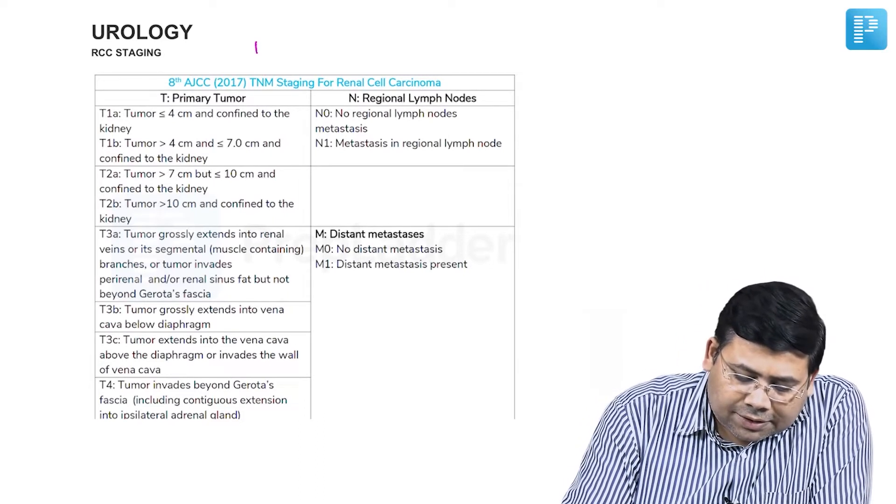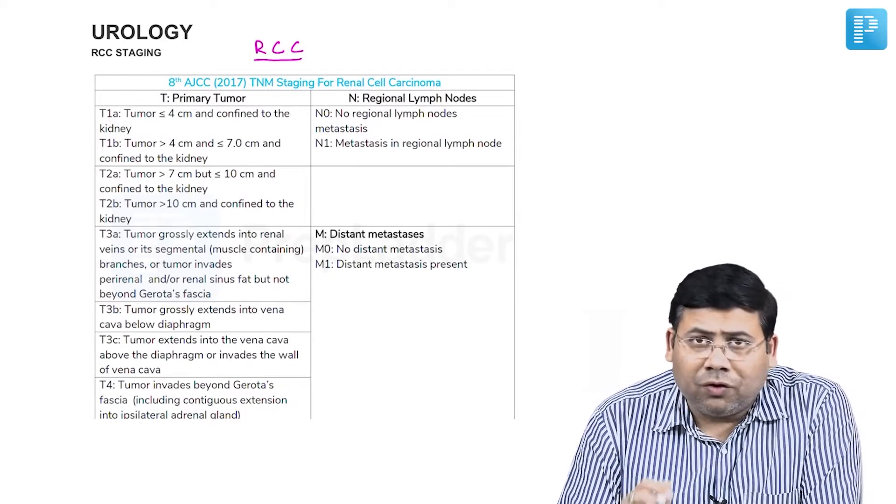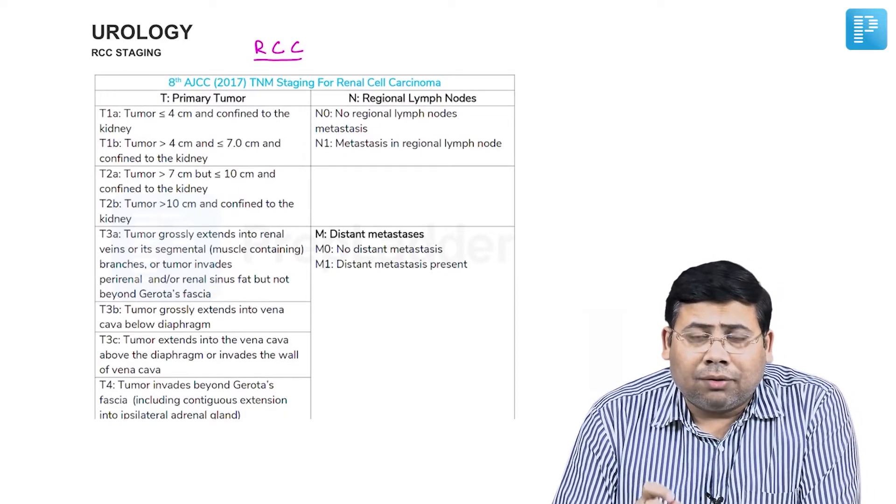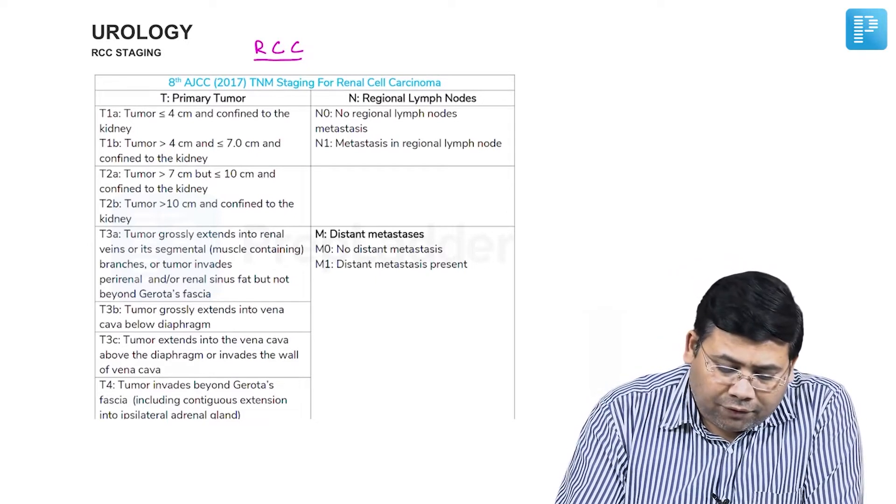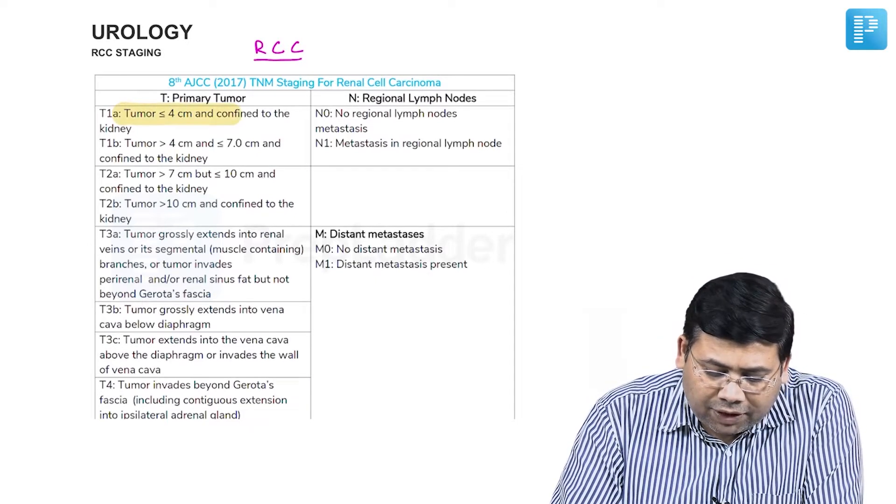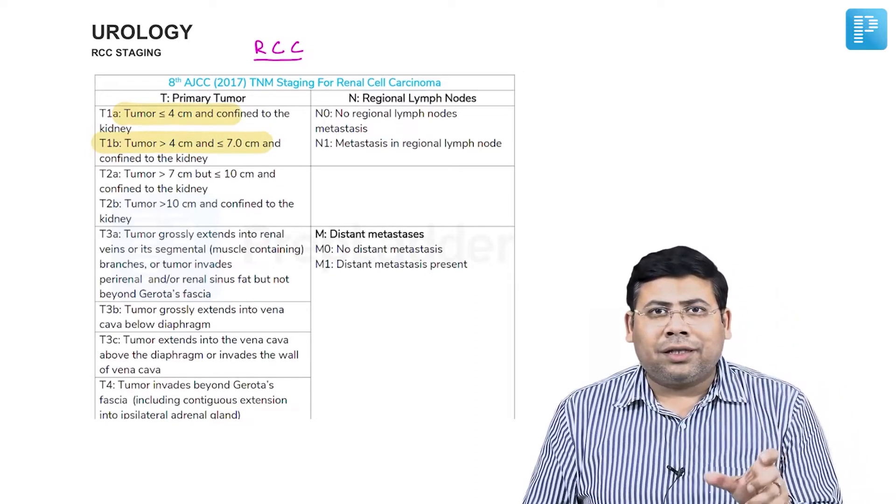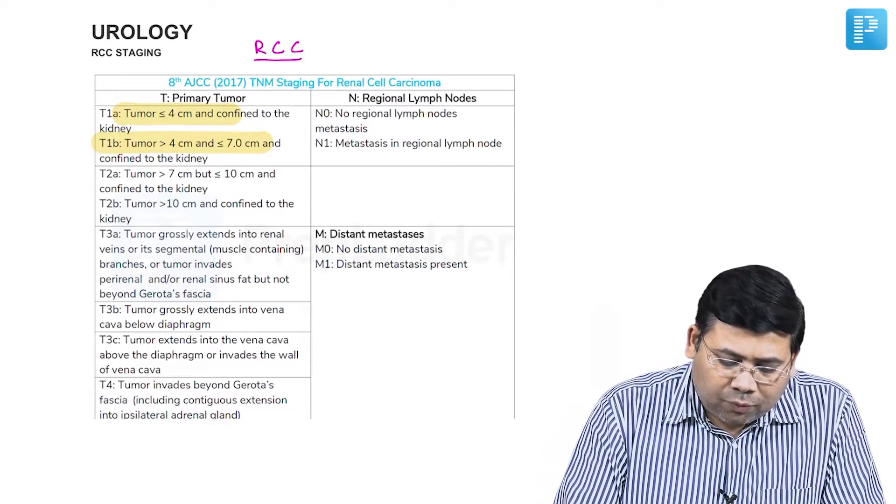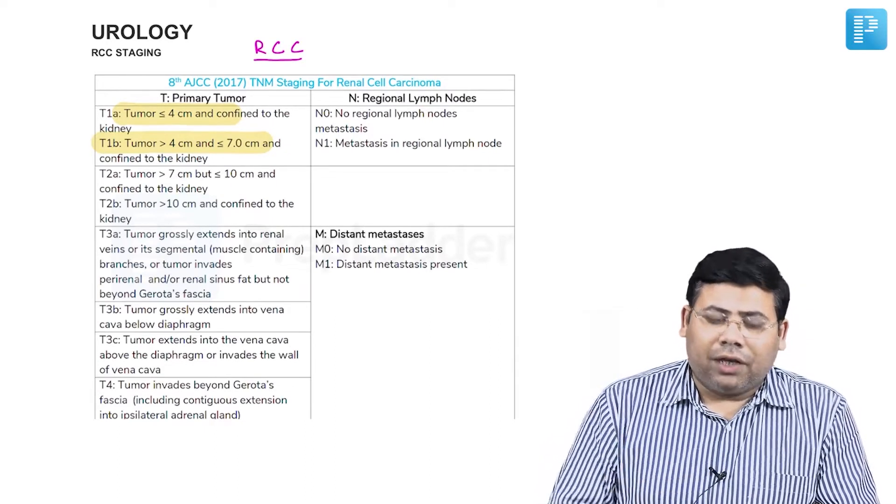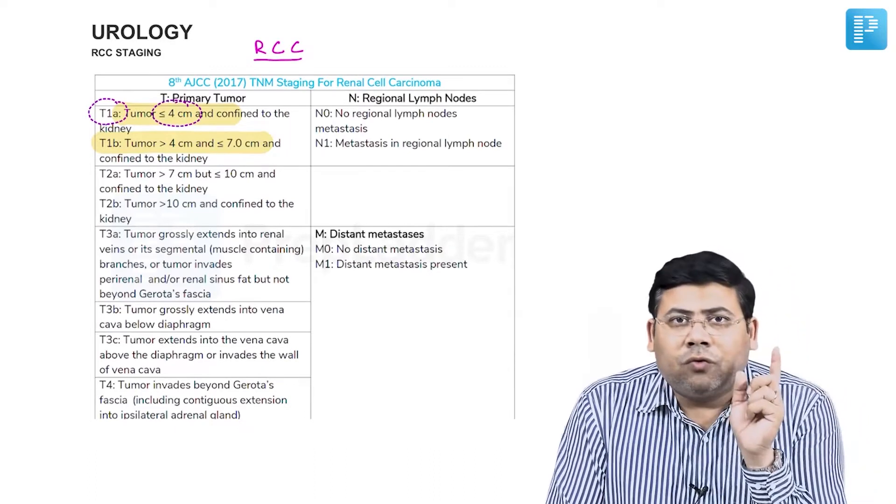This is the staging for RCC, renal cell cancer. When we talk about staging, we have T1. What is T1? Any tumor less than or equal to 7 centimeters. The most important thing is T1a versus T1b. T1a is any tumor less than or equal to 4 centimeters.